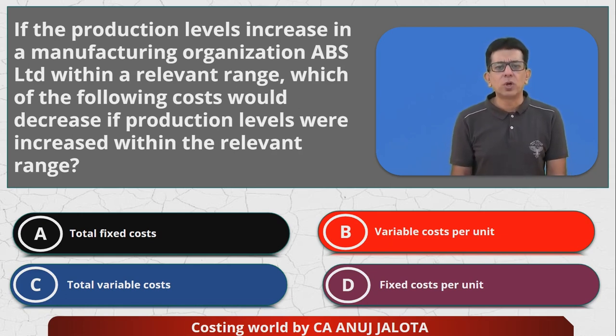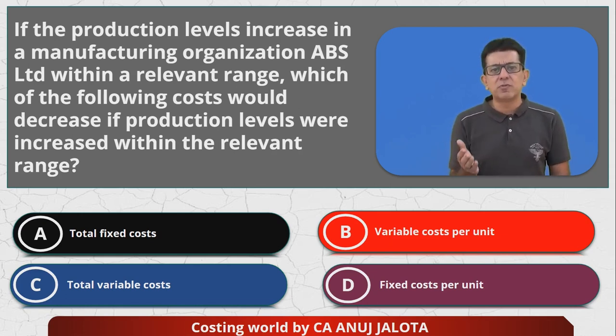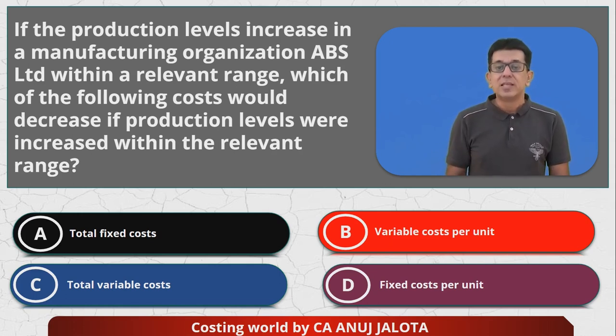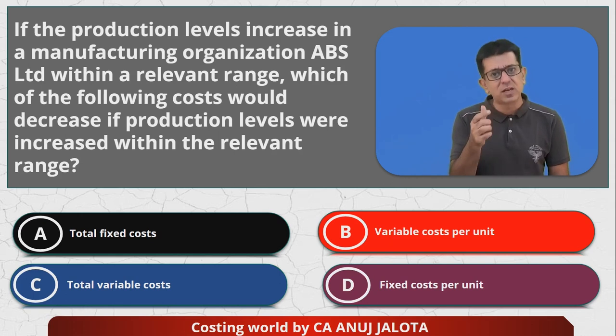Total variable cost will of course rise only. If you are going to be producing more, automatically total variable cost will be rising. They might rise by a lower level, but they will still rise.